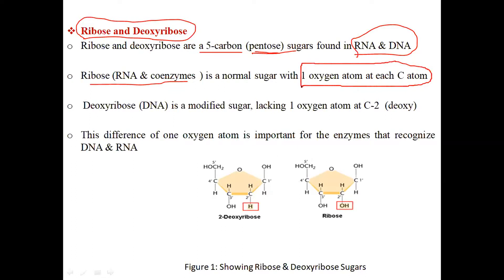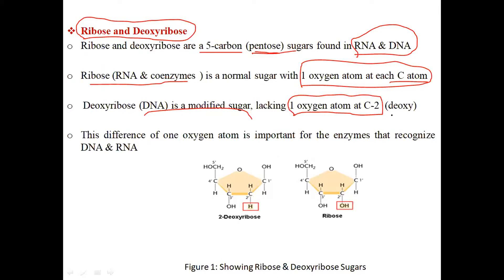Ribose is a normal sugar which has one oxygen atom at each of its five carbon atoms. Deoxyribose, which is found in DNA, is a modified sugar as it lacks one oxygen atom at carbon number two. That is why it is also known as 'deoxy,' because 'deoxy' means the removal of oxygen. This difference of one oxygen atom is very important for enzymes that recognize DNA and RNA as individual entities.